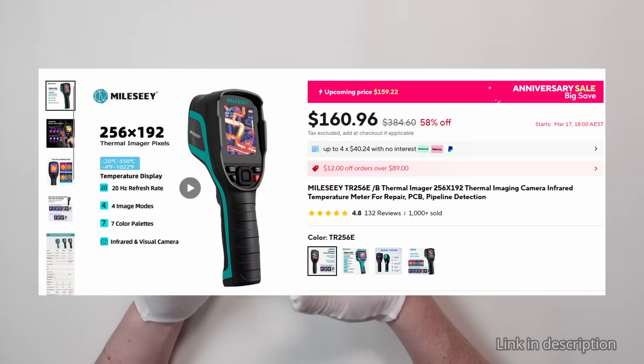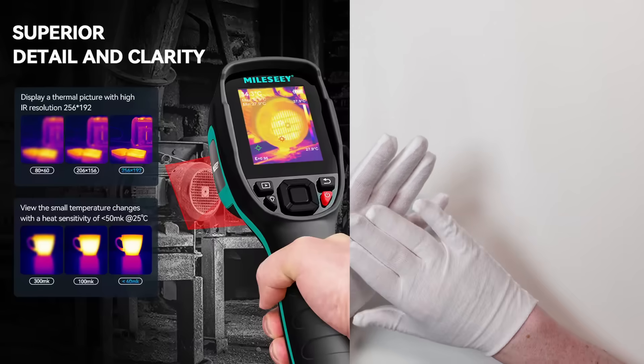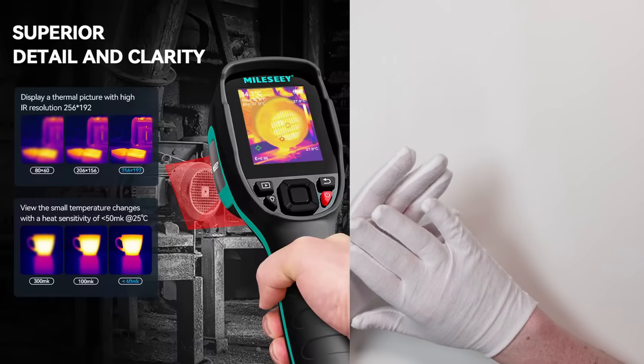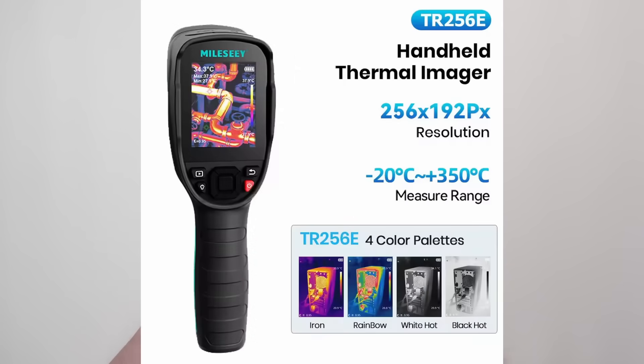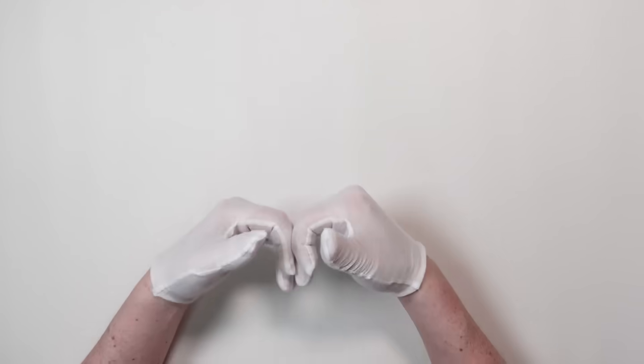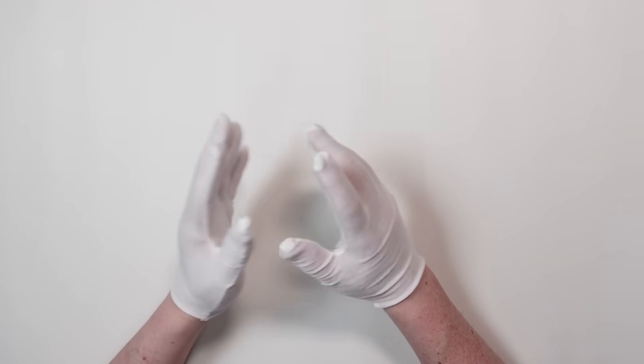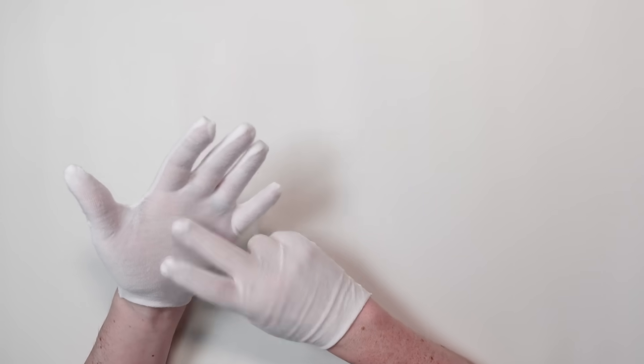Second, the Malesi TR-256E. At $160 before coupons delivered, you're going to get the more detailed 256x192 pixels. It's got lots of reviews, thousand plus units sold. This is a solid buy in my opinion. A lot of people swear by this unit, and the only reason I didn't buy this one specifically is because I needed a bigger screen and video recording.